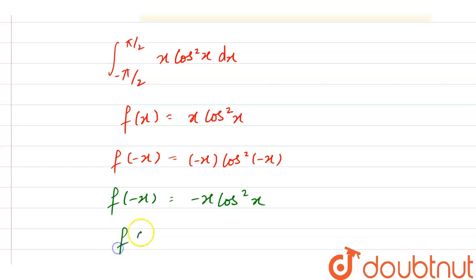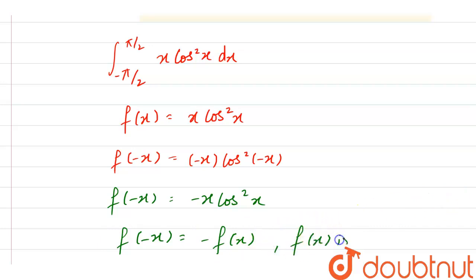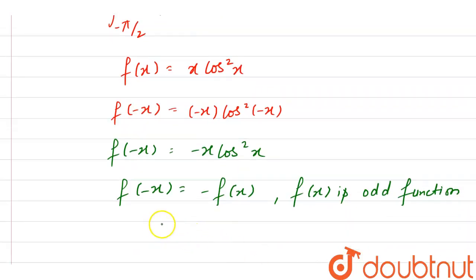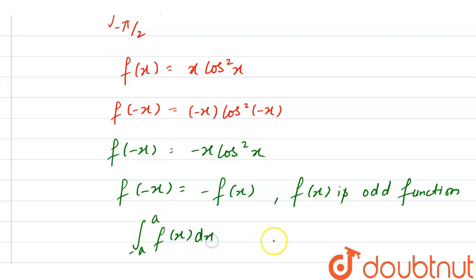So we can write f(−x) equals minus f(x). This means our function f(x) is an odd function. We know that when we have the integral from minus a to a of f(x) dx, and f(x) is an odd function, then this integral equals zero.